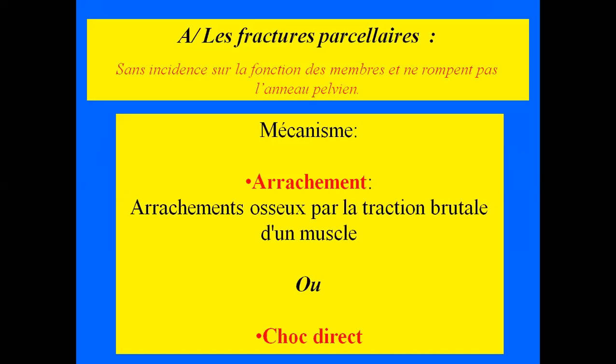On commence par les fractures parcellaires, qui sont, dans la majorité des cas, sans incidence sur la fonction des membres, car elles ne rompent pas l'anneau pelvien. Le mécanisme responsable est double : soit un mécanisme par arrachement — l'arrachement osseux est une fracture due à une contraction brutale d'un muscle qui va détacher son insertion — soit un choc direct. Ces lésions se voient généralement chez les sportifs.